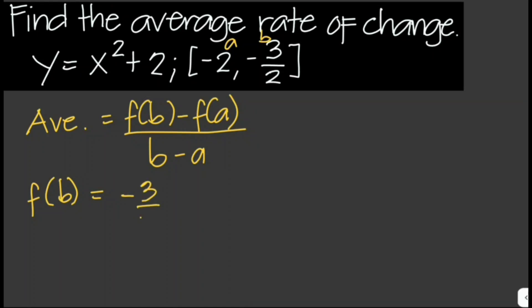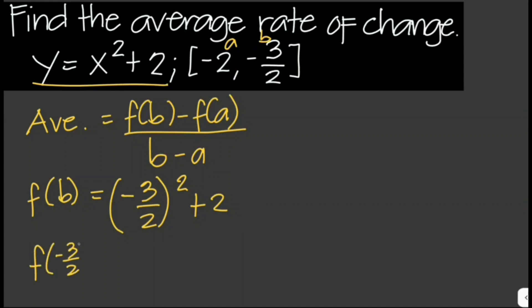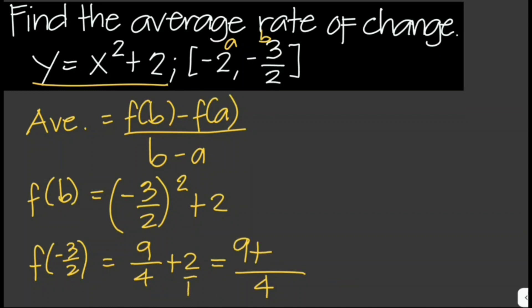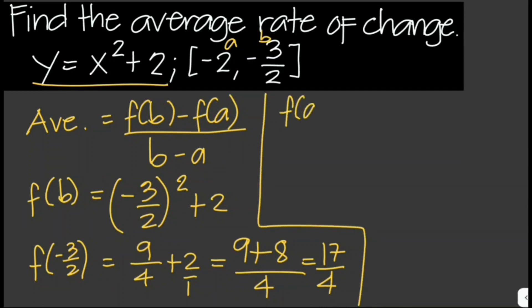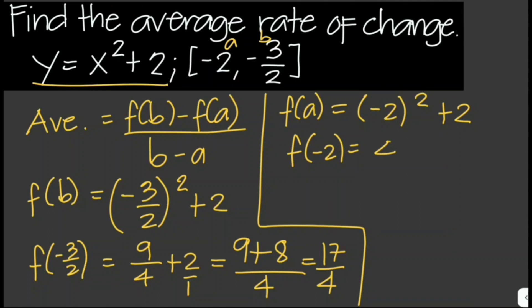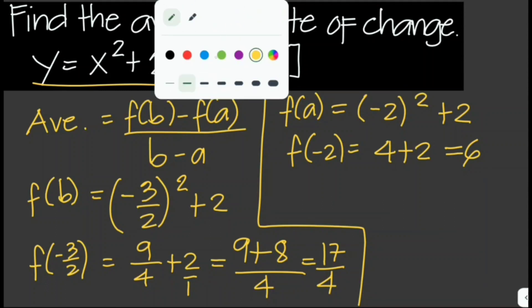We substitute negative 3 halves into the equation: negative 3 halves squared plus 2. So f of negative 3 halves is 9 over 4 plus 2. Getting the LCD, that is 9 over 4 plus 8 over 4, which gives 17 over 4 for f of b. Now for f of a, where a is equal to negative 2, we plug in negative 2: negative 2 squared plus 2, so f of negative 2 is 4 plus 2, which equals 6.